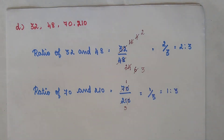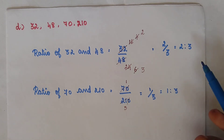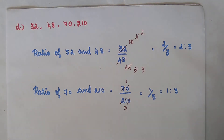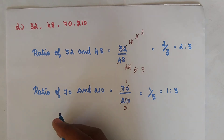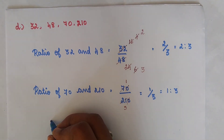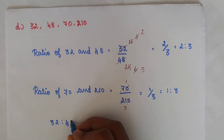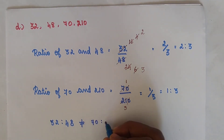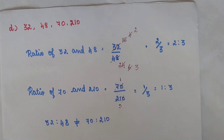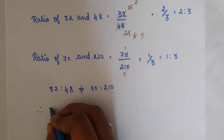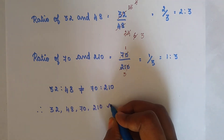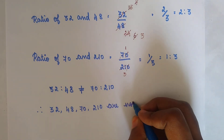Second step: we compare the two ratios. Here, 2 is to 3 is not equal to 1 is to 3. So the ratio of 32 and 48 is not equal to the ratio of 70 and 210. Therefore, 32, 48, 70 and 210 are not in proportion, because the values are not the same.